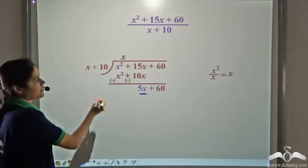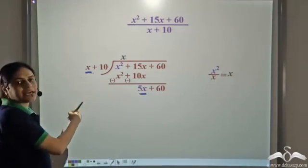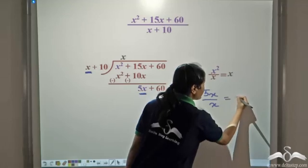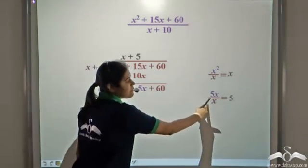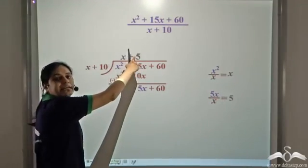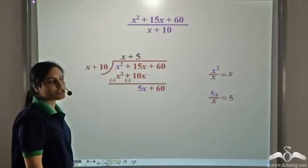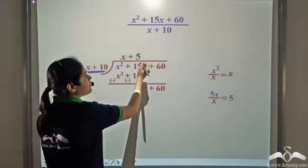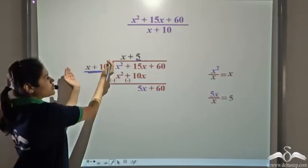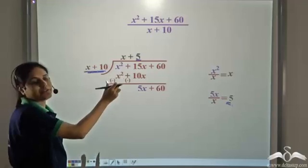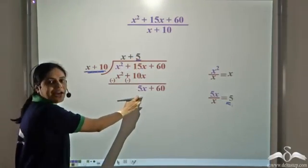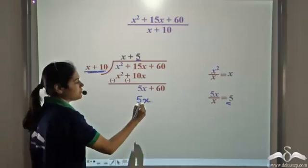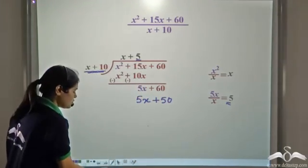We divide 5x by x and get 5. This becomes the second term of the quotient, so we write plus 5. Now multiply the entire divisor x plus 10 by 5: 5 times x gives 5x, and 5 times 10 gives 50, so we get 5x plus 50.